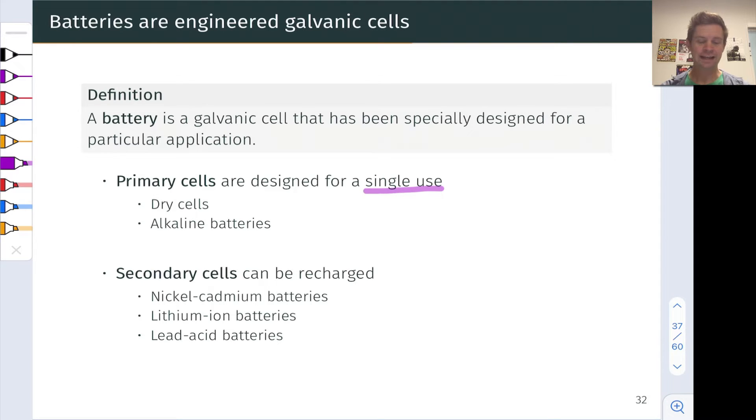But secondary cells can be recharged and these batteries are very important in rechargeable electronic devices like cell phones, cameras, etc. And in these you might find nickel cadmium batteries, lithium ion batteries, obviously hugely important practical applications. You've probably read about lithium ion batteries in the news and lead acid batteries which are put into automobiles and are recharged by the automobile's engine as it drives.